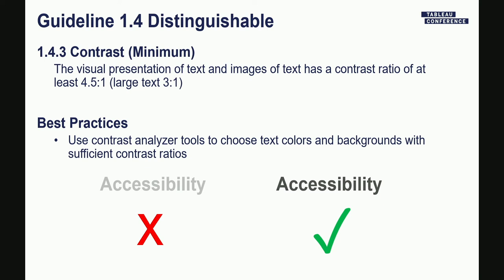Another visual consideration is text contrast — the contrast between foreground and background color of text. There needs to be enough difference so someone with contrast sensitivity loss can still perceive it. The Color Contrast Analyzer tool from the UK lets you use an eyedropper to sample foreground and background and tells you the contrast ratio and whether it meets WCAG guidelines. For example, pale gray text on white does not meet the contrast ratio. Luckily, the default text color in Tableau does meet the contrast guidelines.